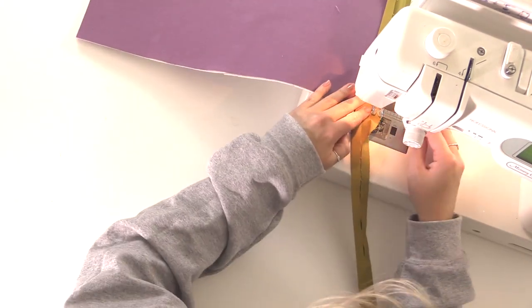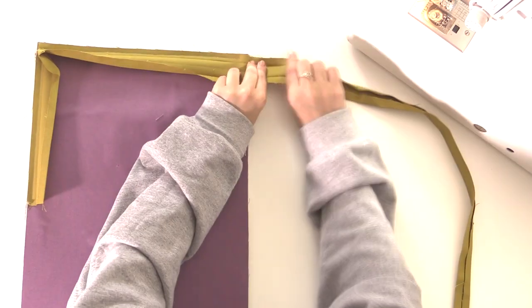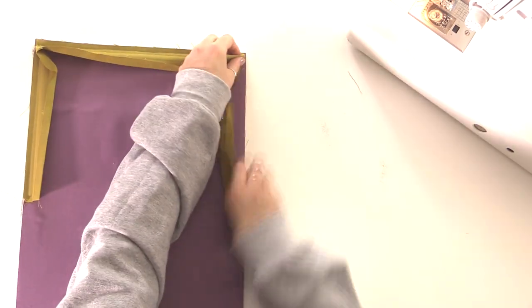A quarter of an inch from the edge, stop, take it out of the machine, twist and then carry on sewing. It can be fiddly but just take your time with it.